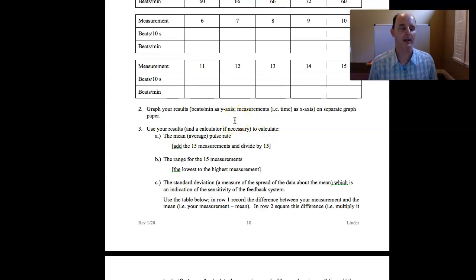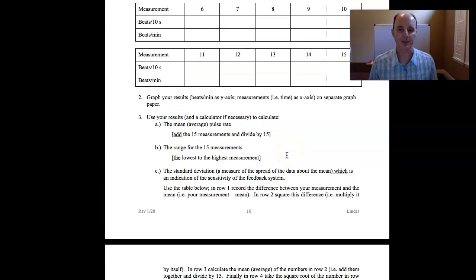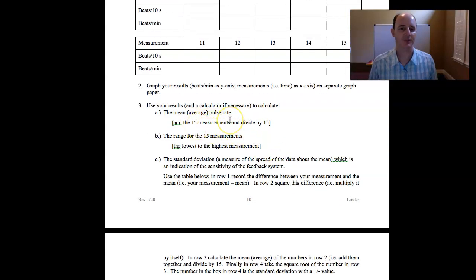Then you plot those points. So at measurement one, I would plot the 60 beats per minute. And then at measurement two, I would plot the 66, and so forth. In the third part, you're going to start doing some statistical analysis on your data. For part three, it says to find the average for your pulse rates. And again, you're using the beats per minute data. So you're going to add up 60 plus 66 plus 66 plus 72, et cetera. You're going to add up all your beats per minute data, and then you're going to divide it by 15, and that'll give you an average.